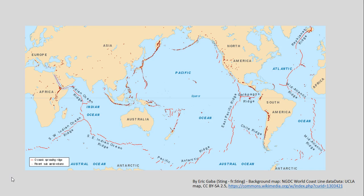We've talked about mid-ocean ridges already and how those create their own type of underwater mountain ranges — they're kind of volcanic in nature. We have the Cascade Mountains up here, and we're talking about other forms of volcanoes, along with the Hawaiian Islands and other examples, as we go through this video.